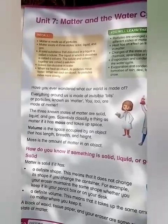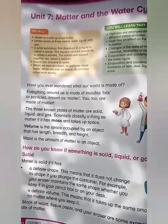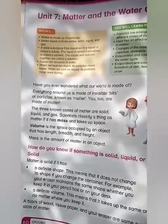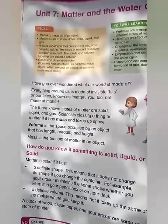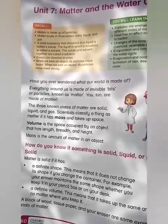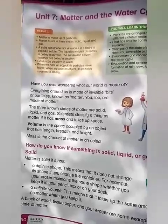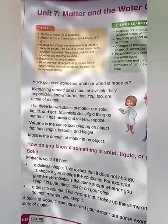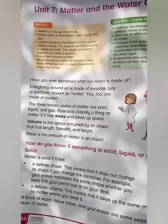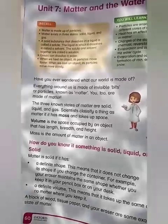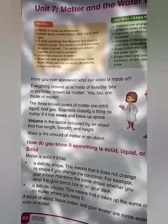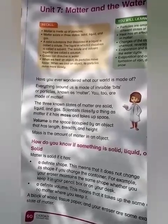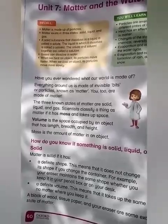Anything that has some mass and occupies space is called matter. Let's take an example of a chair. If you pick up a chair, you feel some weight, and if you put it on the floor it takes some space, so the chair is made up of matter. Let's take an example of a glass. We pick it up and put it on the table — it also takes some space and has some weight. So glass is also an example of matter. The water inside the glass is also matter because it also has some weight and takes some space.